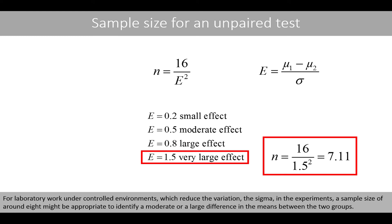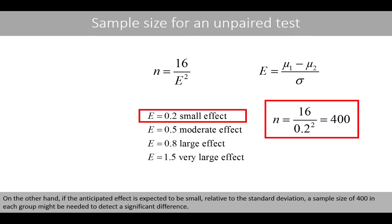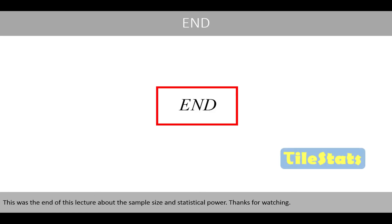For laboratory work under controlled environments, which reduces the variation in the experiments, a sample size of around 8 might be appropriate to identify a moderate or large difference in the means between two groups. On the other hand, if the anticipated effect is expected to be small relative to the standard deviation, a sample size of 400 in each group might be needed to detect a significant difference. This was the end of this lecture about the sample size and statistical power. Thanks for watching.